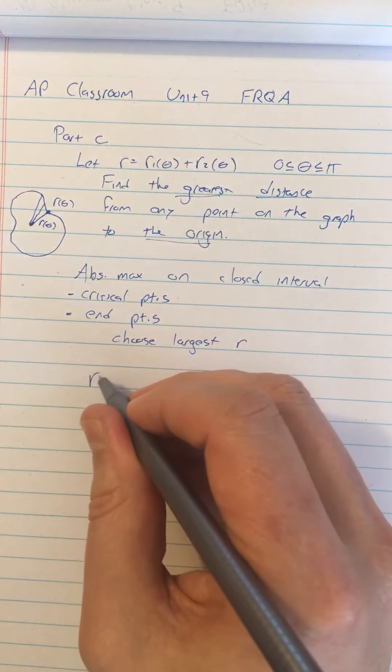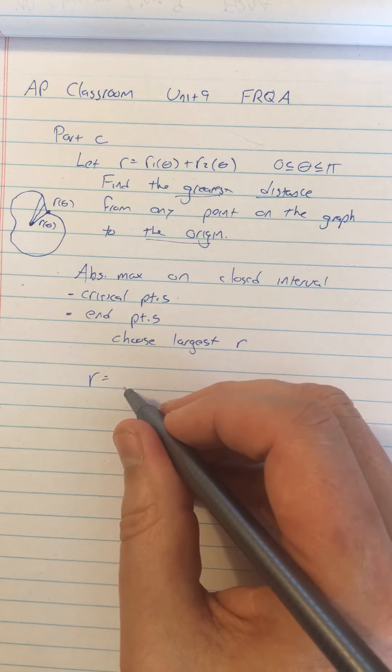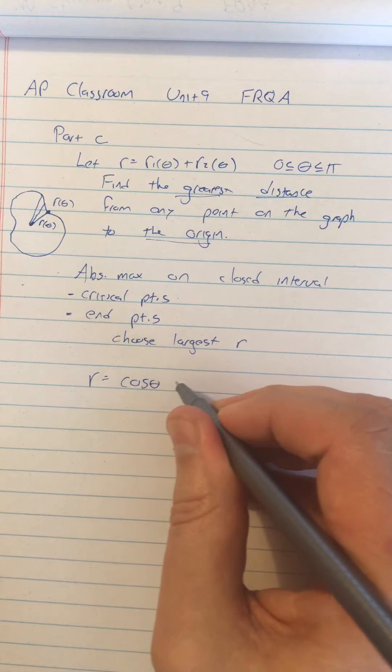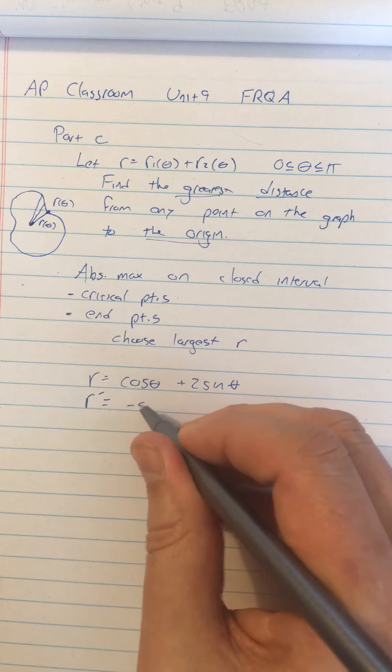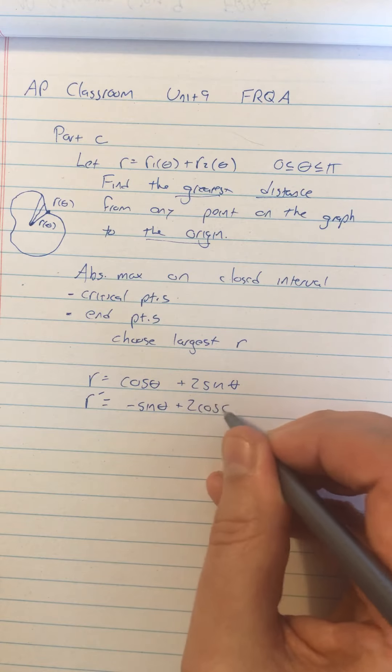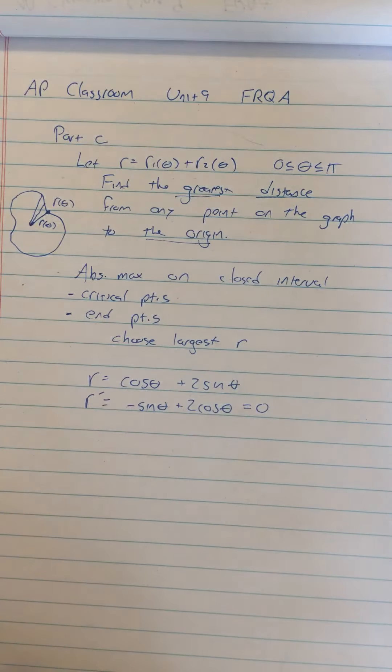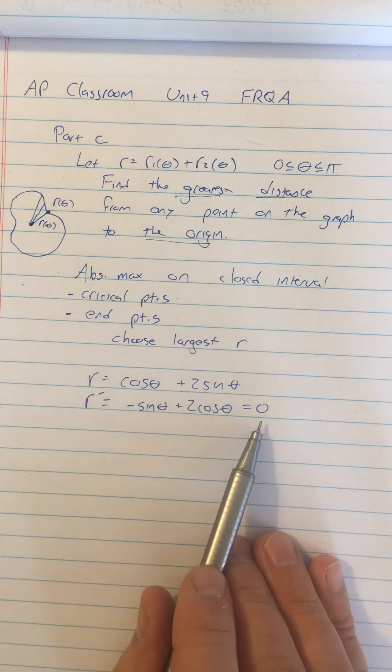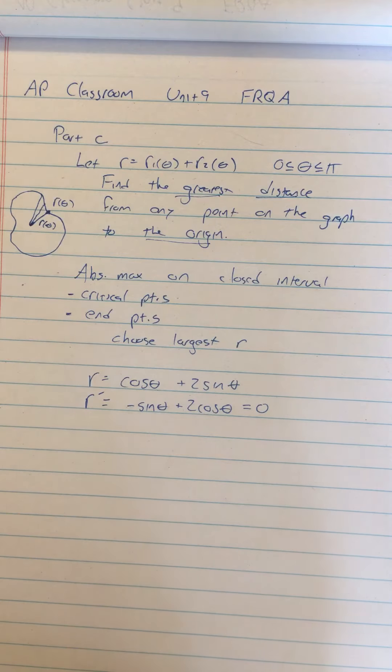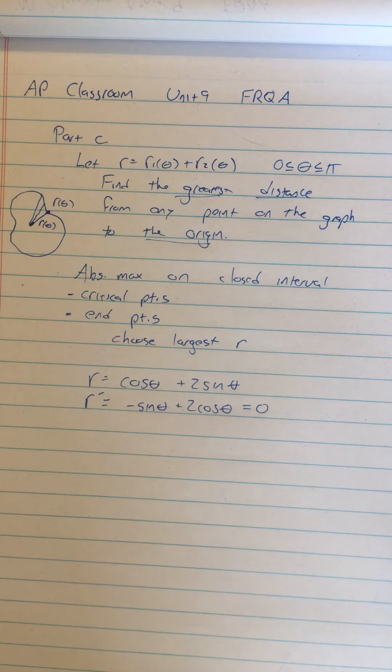So let's look at what our function is. R is equal to cosine theta plus 2 sine theta. So that means that R prime equals negative sine theta plus 2 cosine theta. And we're going to set that equal to zero because that's how we find our critical points. And by the way, if you just wrote this, the derivative is equal to zero, you got a point for finding a derivative and setting it equal to zero. Even if you get the rest of it wrong, we do this, we got one point. So we need to solve that. We can't really solve that analytically by any simple means. So what we're going to do is solve it graphically.